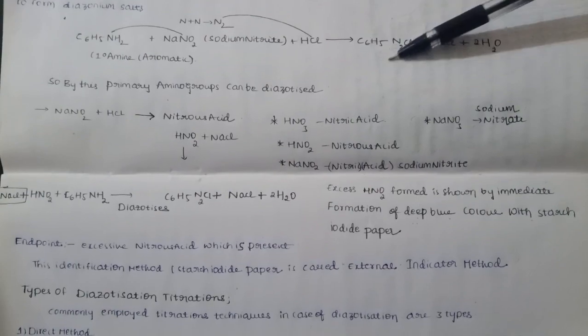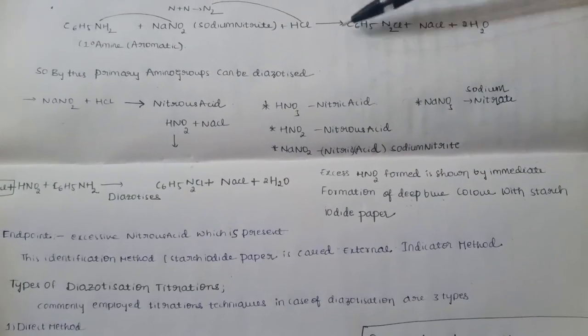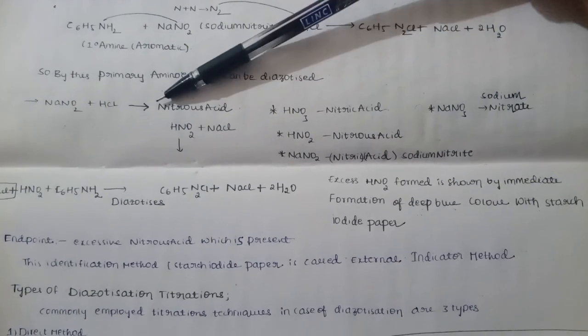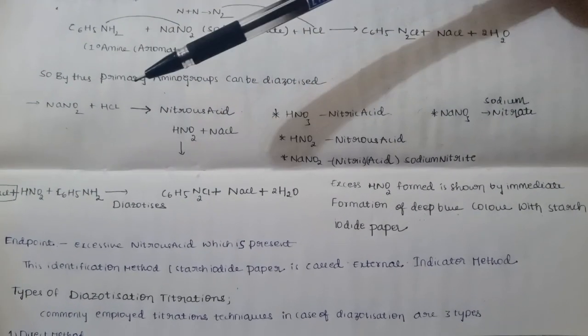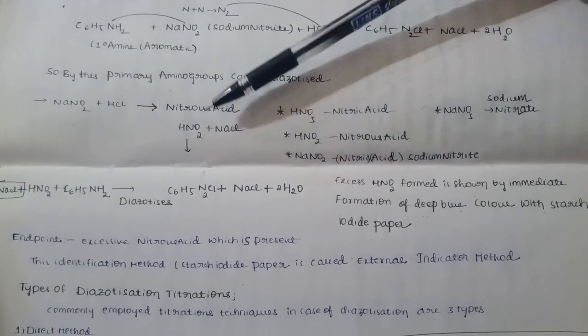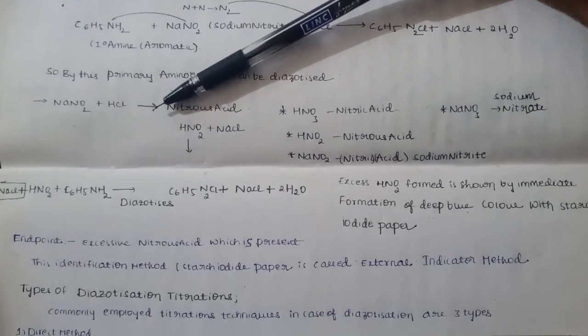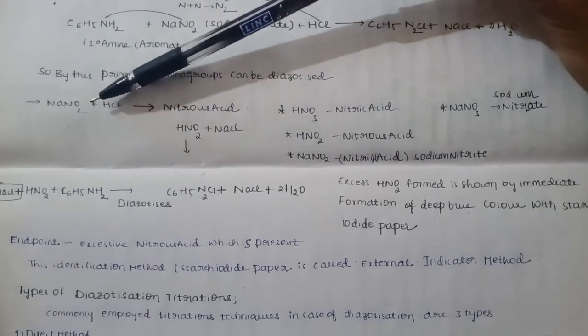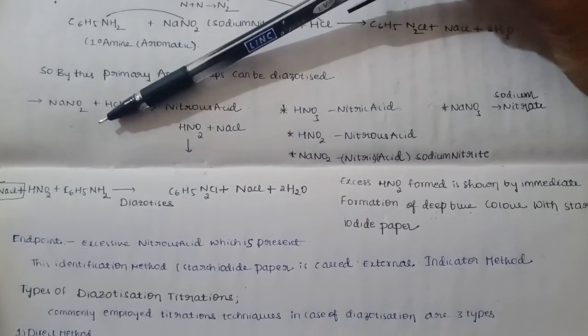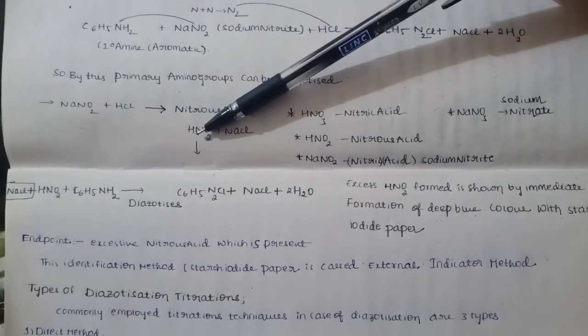This gives rise to C6H5N2Cl and sodium chloride and water molecules. By this, primary amine groups can be diazotized. NaNO2 reacts with HCl to form nitrous acid HNO2, and sodium and chlorine react to form sodium chloride.